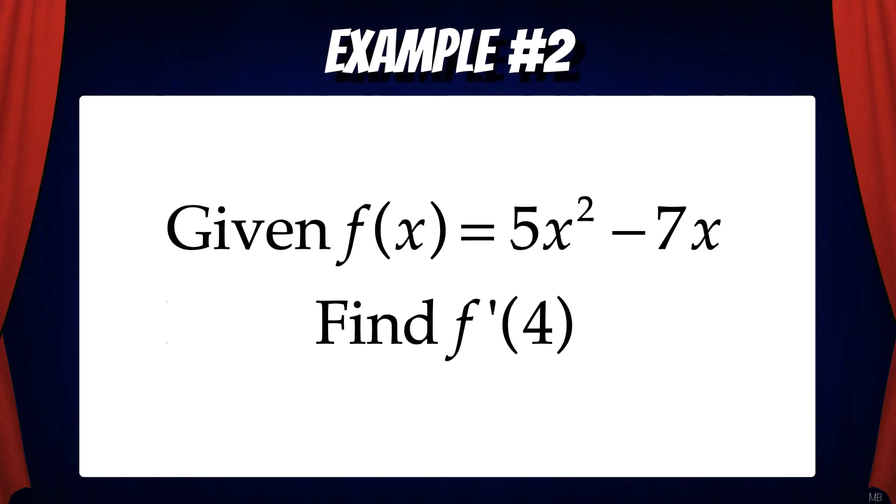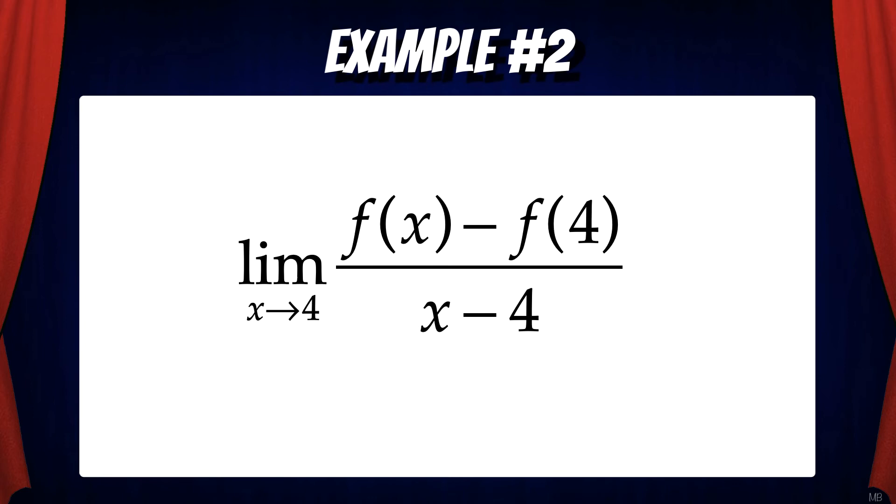Let's do another problem. Suppose you're given f of x equals 5x squared minus 7x. Find f prime of 4. In this case c equals 4. So now let's apply the formal definition of a derivative at a point. And this gives us the limit as x goes to 4 of f of x minus f of 4 over x minus 4.